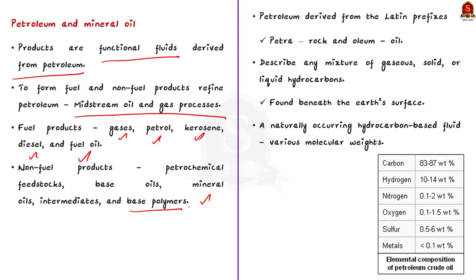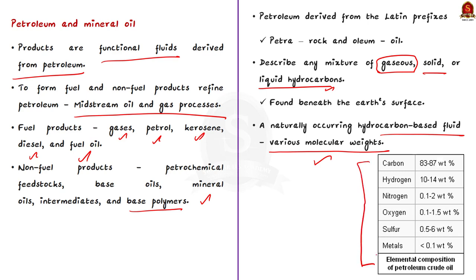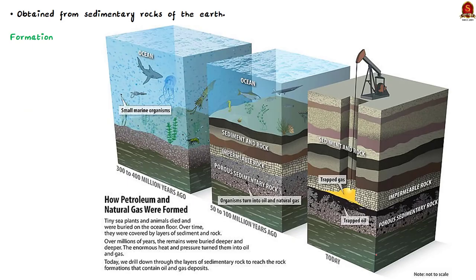The term petroleum is derived from the Latin prefix 'petra' meaning rock and 'oleum' meaning oil — so petroleum essentially means rock oil. This is correct because petroleum is extracted from sedimentary rocks. It is a naturally occurring hydrocarbon-based fuel with various molecular weights. The process of formation of petroleum started in the Tertiary period — that is, 3 million years ago. Dead tiny sea plants and animals got buried on the ocean floor, covered by layers of sediments and rocks. Buried deeper and deeper under enormous heat and pressure, they turned into oil and gas — what we extract during drilling today.